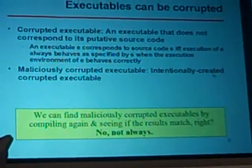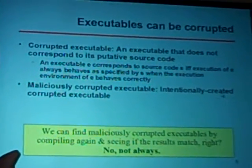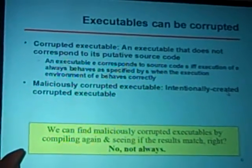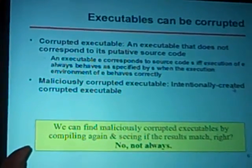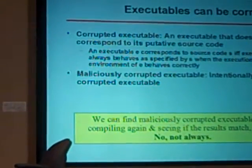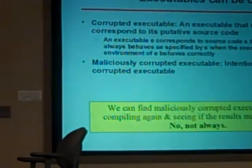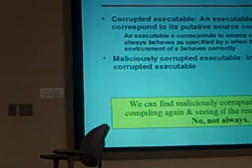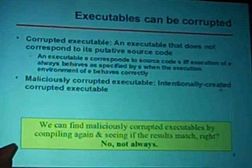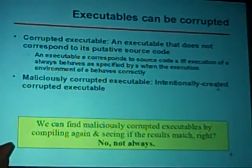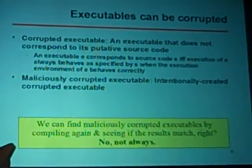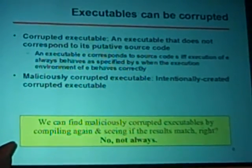What is the risk? Let me define a corrupted executable: an executable that does not correspond to the source code it's supposed to correspond to. Executable E corresponds to source code S if and only if the execution of E always behaves as specified by S when E behaves correctly. A maliciously corrupt executable is a corrupt executable that was intentionally created — and intent is an important point I'll return to.